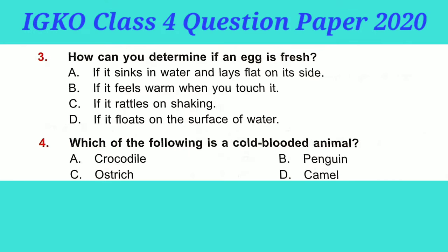Question No. 3: How can you determine if an egg is fresh? Option A is correct: if it sinks in water and lays flat on its side.